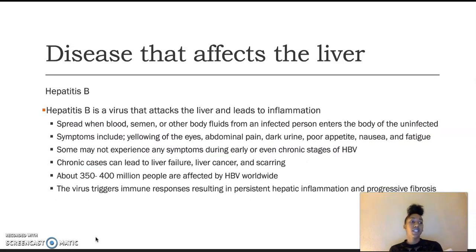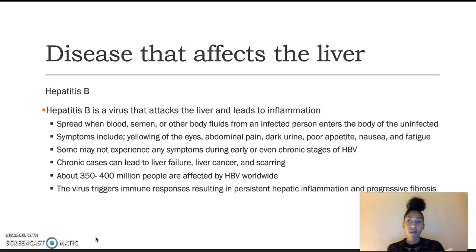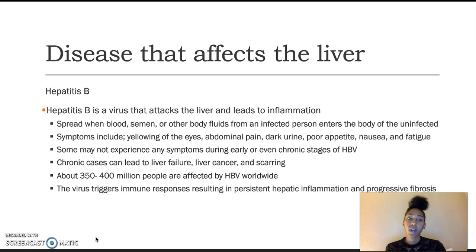A disease that affects the liver is hepatitis B. Hepatitis B is a virus that attacks the liver and leads to inflammation. It is spread when blood, semen, or other bodily fluids from an infected person enter the body of an unaffected person. Symptoms include yellowing of the eyes, abdominal pain, dark urine, poor appetite, nausea, and fatigue.